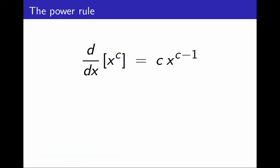The Power Rule states that the derivative of x to the c, with respect to x, is c times x to the c minus 1, where c is a constant.